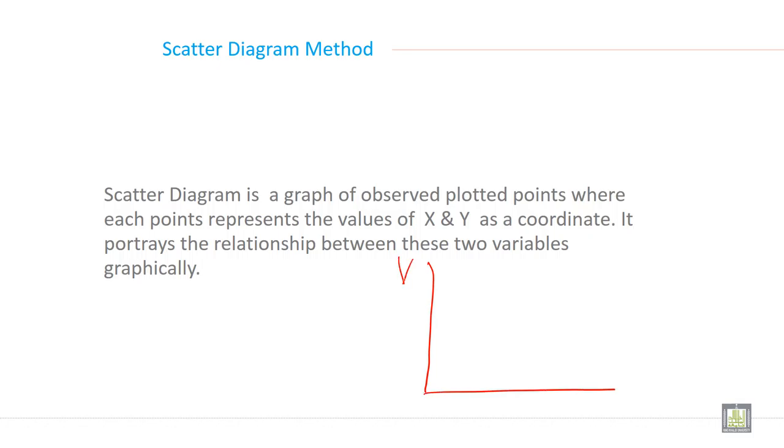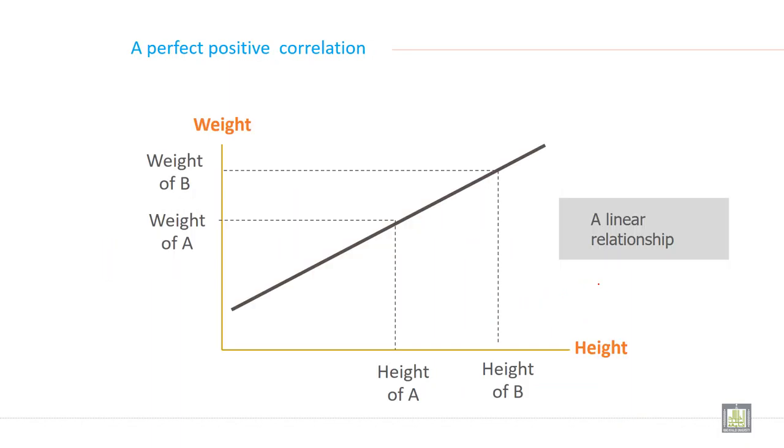Here we are writing the dependent variable, here we are writing the independent variable, and this is the scatter diagram. It is in a rectangular shape, always. Through a scatter diagram, we are studying the relationship.